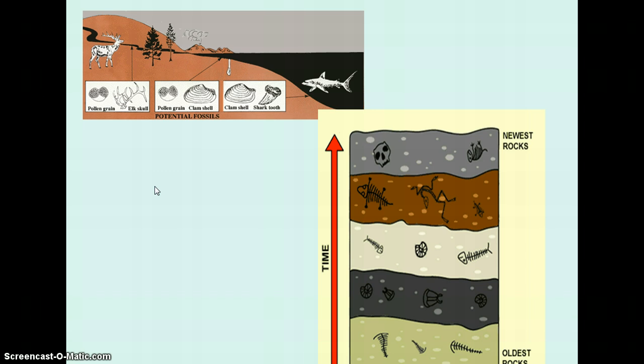So the type of fossil found in a particular kind of rock can tell you something about the environment at the time that the rock was formed.